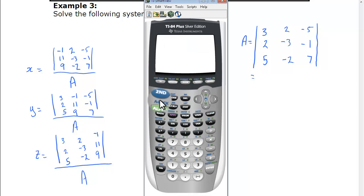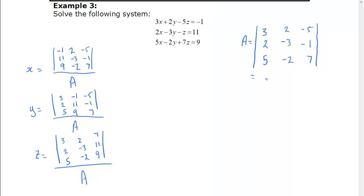So we've entered our determinant, second function quit, second function matrix. Now we do something with it, so that's math, enter. Now we need to say, okay, what was it called? So second function matrix again, it was A we put it, so enter, close bracket, enter. And we find the determinant is minus 162. So there's our determinant of A, and so that's what's going to be in each denominator.